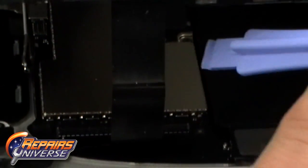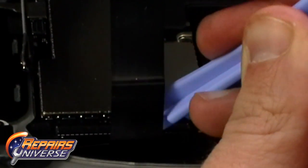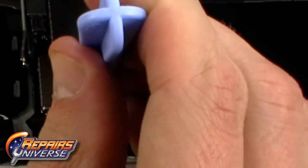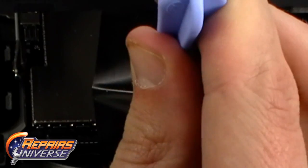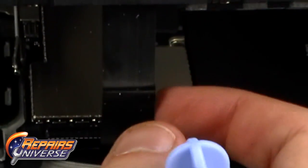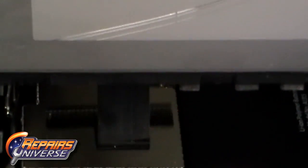Using a safe open pry tool, release the two jaw connectors allowing you to release the ribbon cable. Once the jaws are open, you can release the ribbon.